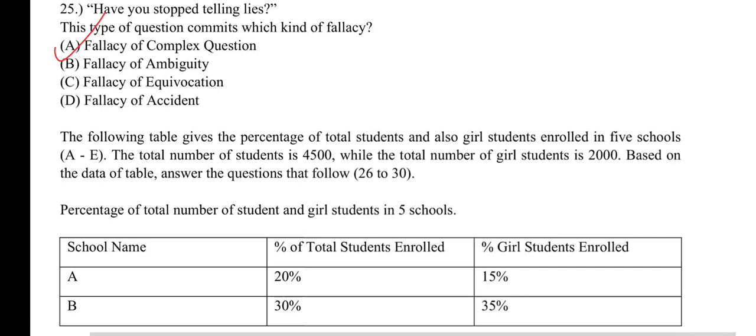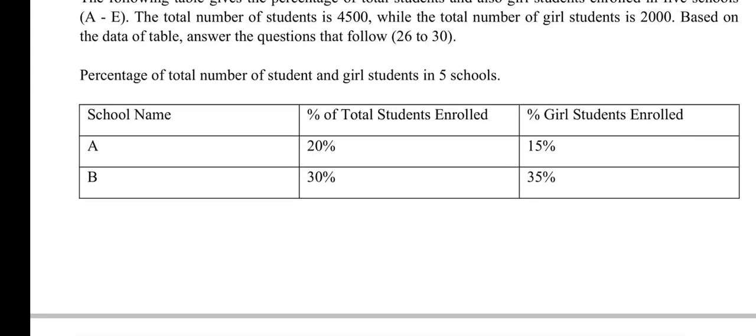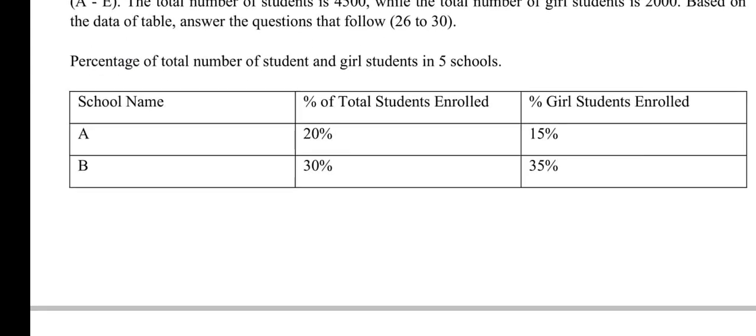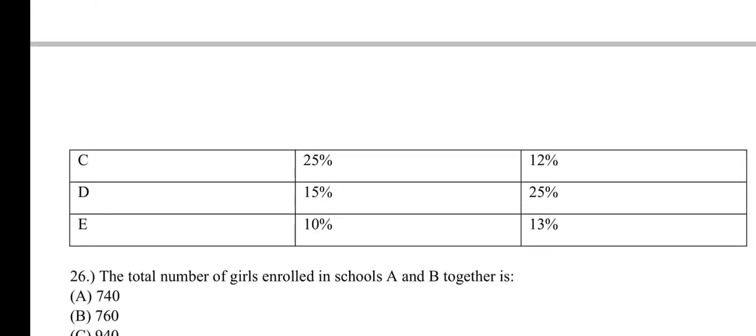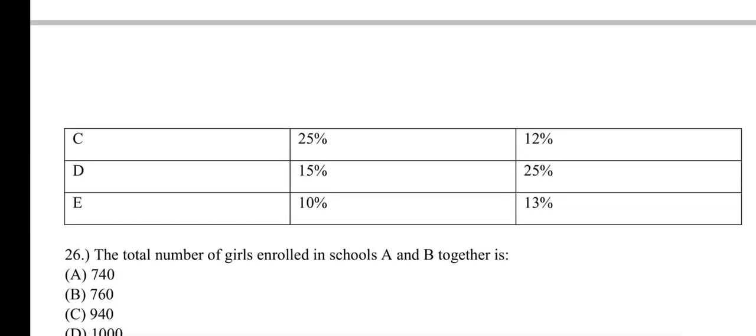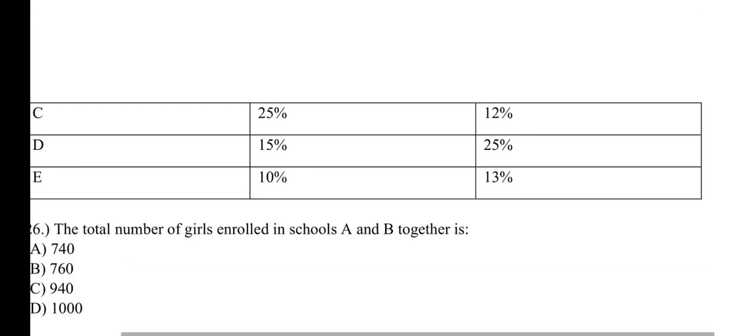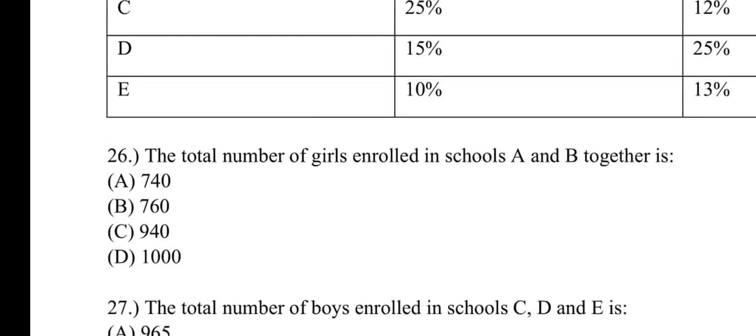Number twenty-six to thirty: The following table gives the percentage of total students and also girl students enrolled in five schools A to E. The total number of students is 4500 while the total number of girl students is 2000. The table shows: School A has 20% of total students and 15% of girl students, School B has 30% and 35%, School C has 25% and 12%, School D has 15% and 25%, School E has 10% and 13%.